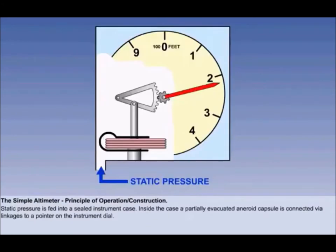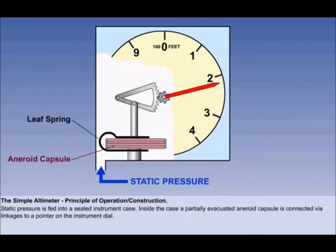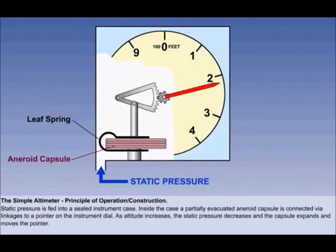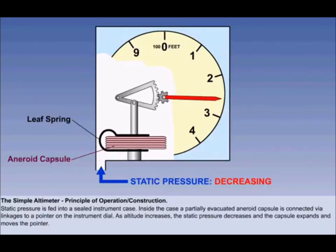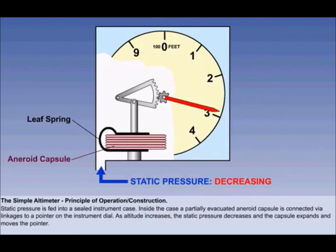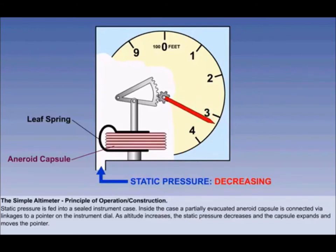In its simplest form, static pressure is fed into a sealed instrument case from the static source. Inside the instrument case is a partially evacuated capsule, or aneroid capsule. Expansion and contraction of the capsule is kept under control by a leaf spring, and the controlled movement is transmitted via a system of linkages to the pointer on the instrument dial. As altitude increases, the static pressure inside the instrument case decreases, and the capsule expands, which causes the pointer to rotate and indicate an increase in altitude.